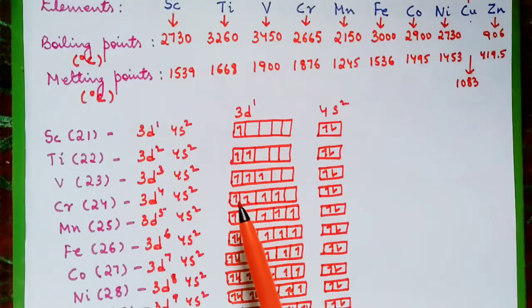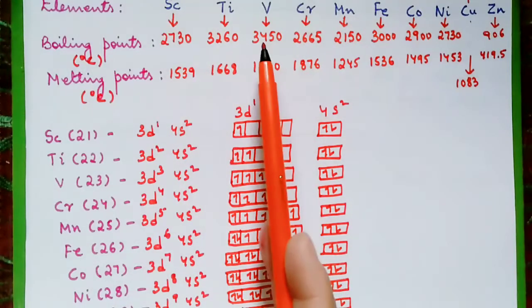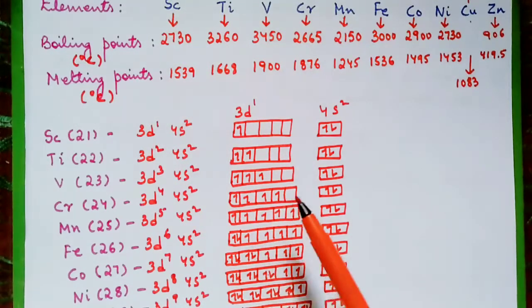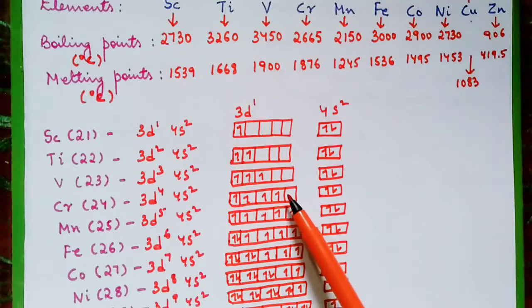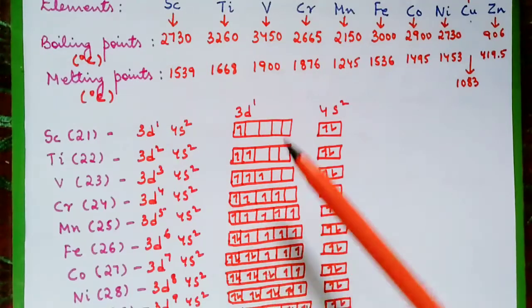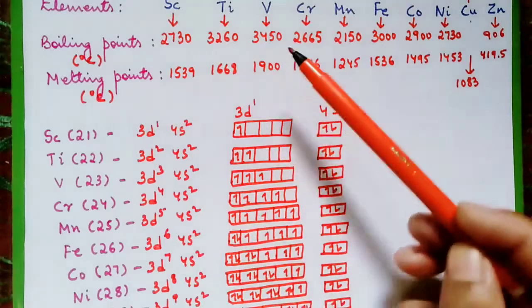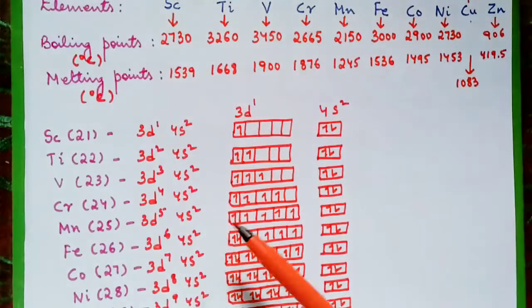The next element has 4 unpaired electrons. But why is its boiling point lower than that of vanadium and titanium? Because it needs only 1 more electron to attain half-filled stability. So, even though it has 4 unpaired electrons, it has a lower boiling point compared to vanadium and titanium.